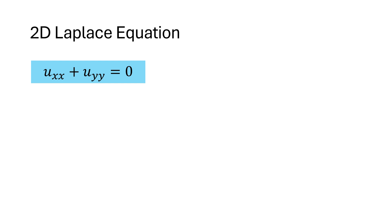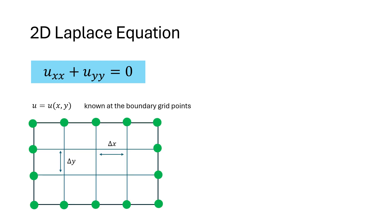In this case, U is a function of space variables only, and on a discrete grid, its values are known at the boundary grid points.